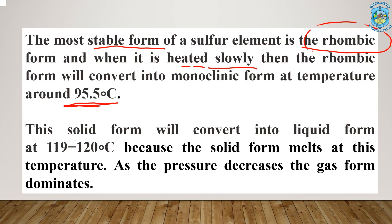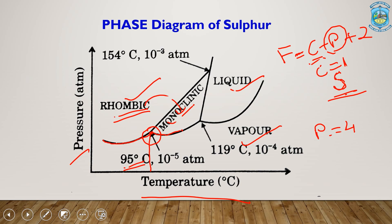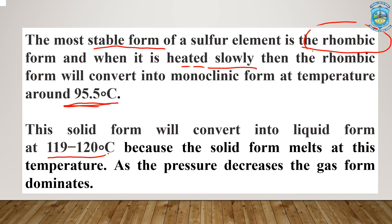Similarly, when the monoclinic form is heated further and we reach the temperature of 119 to 120 degrees Celsius, the solid form starts getting melted and we achieve the liquid form. This conversion occurs at a temperature of 119 to 120 degrees Celsius with atmospheric conditions of 10⁴ atmosphere. As the pressure decreases, the gaseous form dominates, and with increase in pressure the liquefaction will start to occur.